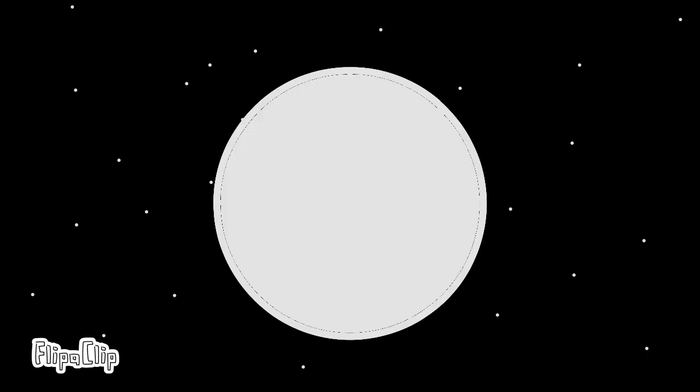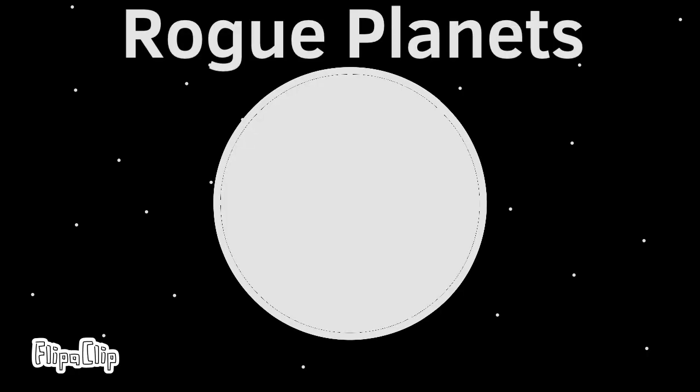And these planets that don't orbit stars are called rogue planets, because they just roam around without any gravitational pull to hold on to.